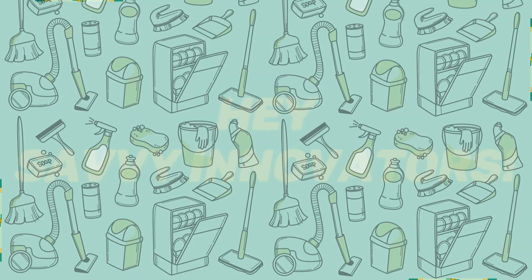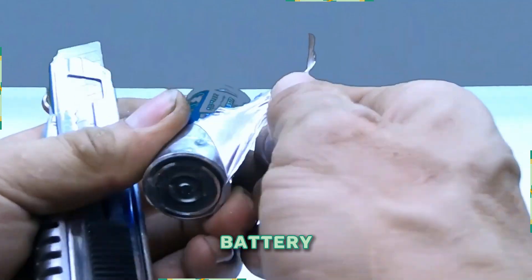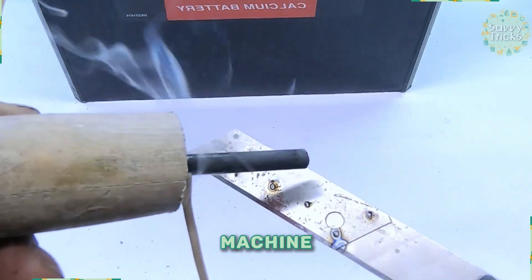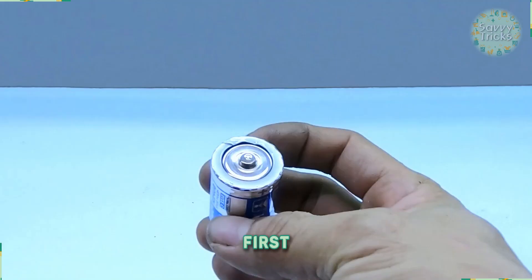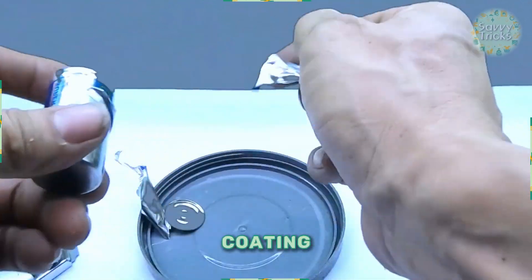Hey savvy innovators, today on Savvy Tricks we're about to show you how to transform a simple battery cell into a powerful welding machine. Let's get started. First, take a D size 1.5 volt battery, then remove the coating from it.